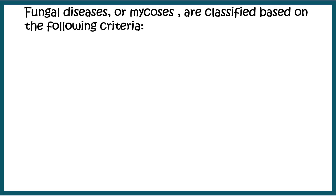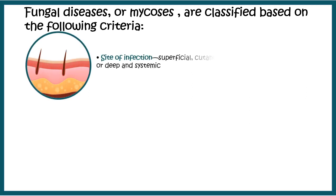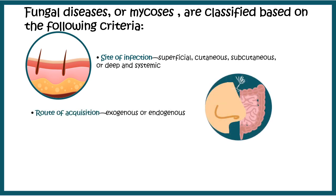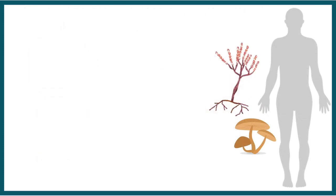Fungal diseases, or mycosis, are classified based on a few criteria. First, the site of infection — whether it is superficial, cutaneous, subcutaneous, or deep and systemic. Second, the route of acquisition, which could be either endogenous or exogenous, such as through inhalation or already present in the gut microbiota. Third, the virulence — whether it is a primary or opportunistic pathogen.